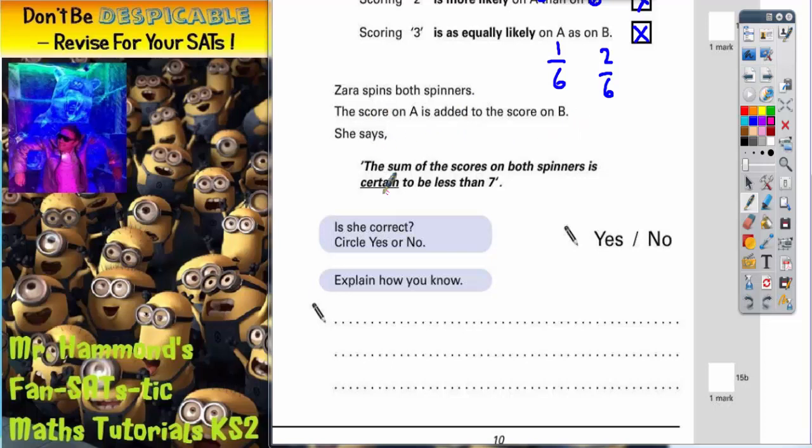She says the sum, which is a posh word for total. So the total of the scores on both spinners is certain to be less than seven. Is she correct? Yes or no.